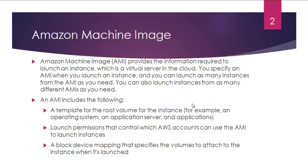So what does an AMI contain? It contains a template for the root volume for the instance — for example, an operating system. It might also include an application server and applications. It also contains launch permissions that control which AWS accounts can use the AMI to launch instances. Additionally, it contains a block device mapping that specifies the volumes to attach to the instance when it is launched.